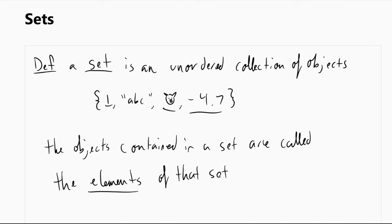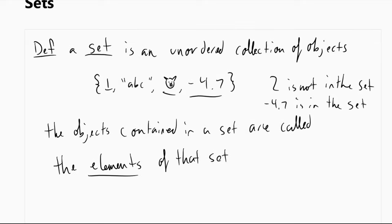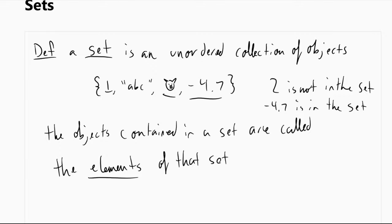So when we're looking at a set, the thing that we really care about is whether certain objects are contained within a set or not. For example, 2 is not in this set but negative 4.7 is in the set. And that's really what matters most when we're talking about sets. We don't care about how many times each element shows up or what order each element is in. We just want to know what is in the set, what is not in the set.